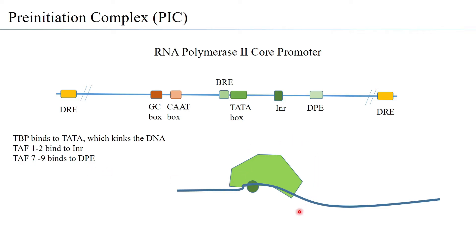Whether it is the TATA box, the INR, or the DPE, all of them are actually bound by the TF2D complex. So, if you have a promoter without the TATA box, the TF2D can still bind to the core promoter region because of the presence of INR and the DPE.